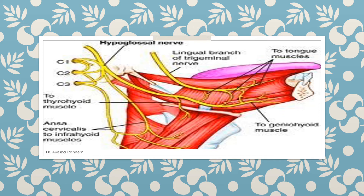It then runs forward and crosses the internal and external carotid arteries and the loop of the lingual artery. This loop is very important in cases of spotting or surgeries performed on the lower surface of the tongue or floor of the mouth. It then passes deep to the posterior margin of the mylohyoid muscle, lying on the lateral surface of the hyoglossus muscle, and sends branches to the muscles of the tongue.